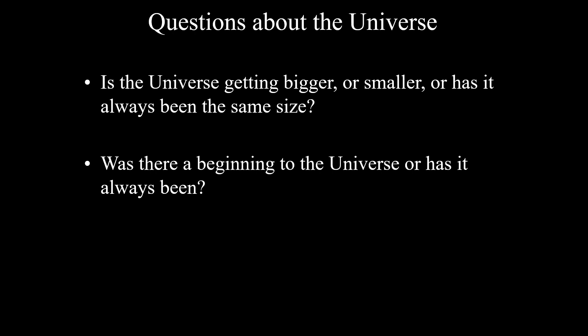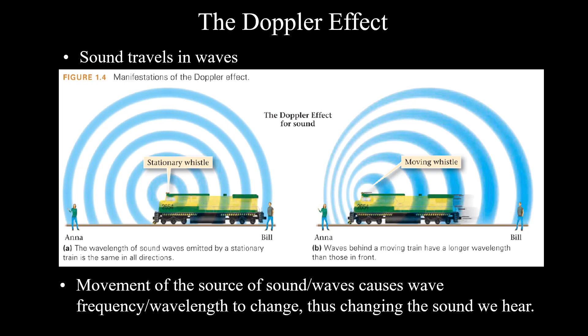As humans and philosophers started to think about the earth's place in the solar system and the universe, two fundamental questions came to light pretty early on: Is the universe getting bigger or smaller, or has it always been the same size? And was there a beginning to the universe, or has it always been? In order to figure that out, we looked at how waves change, and one way to put that into perspective is to provide an analogy with sound waves. Sound waves are very analogous to electromagnetic radiation in the form of light — they both travel as waves.